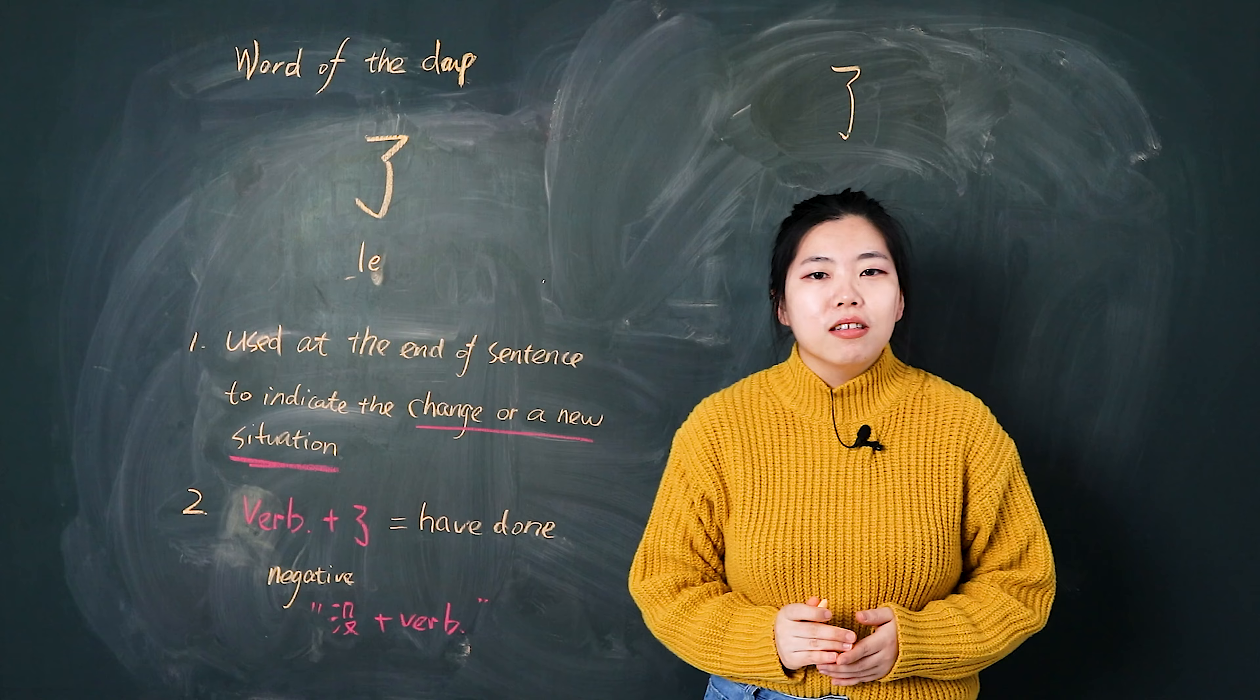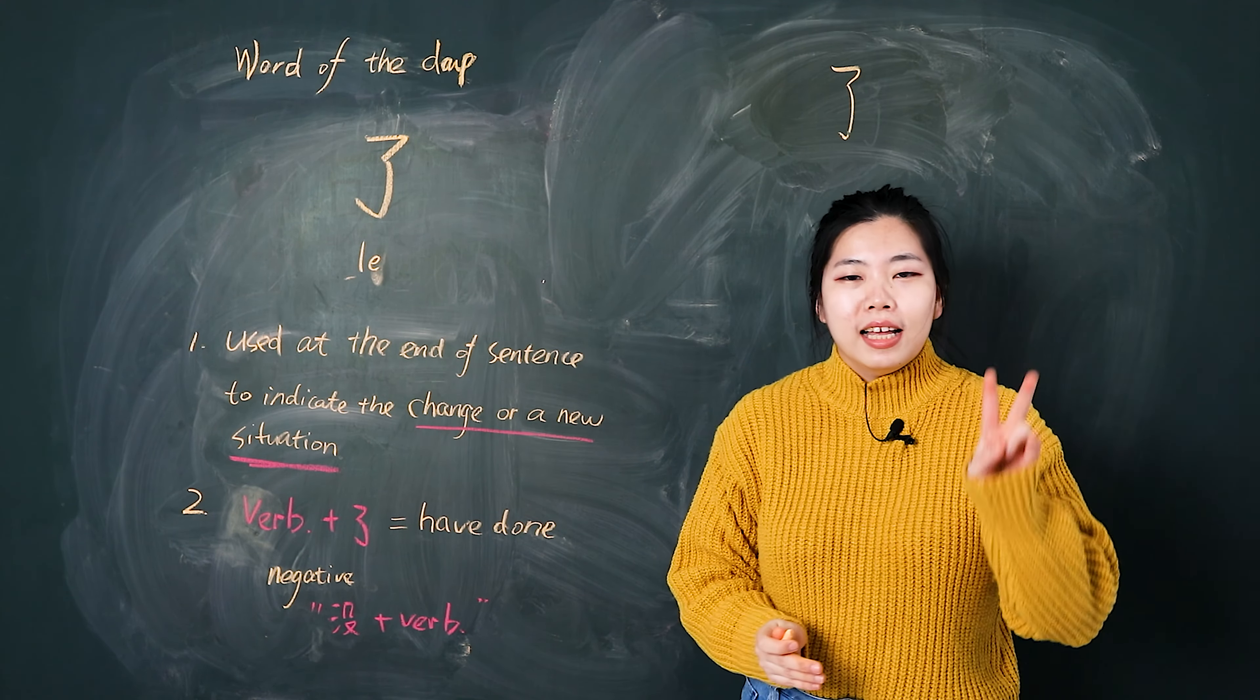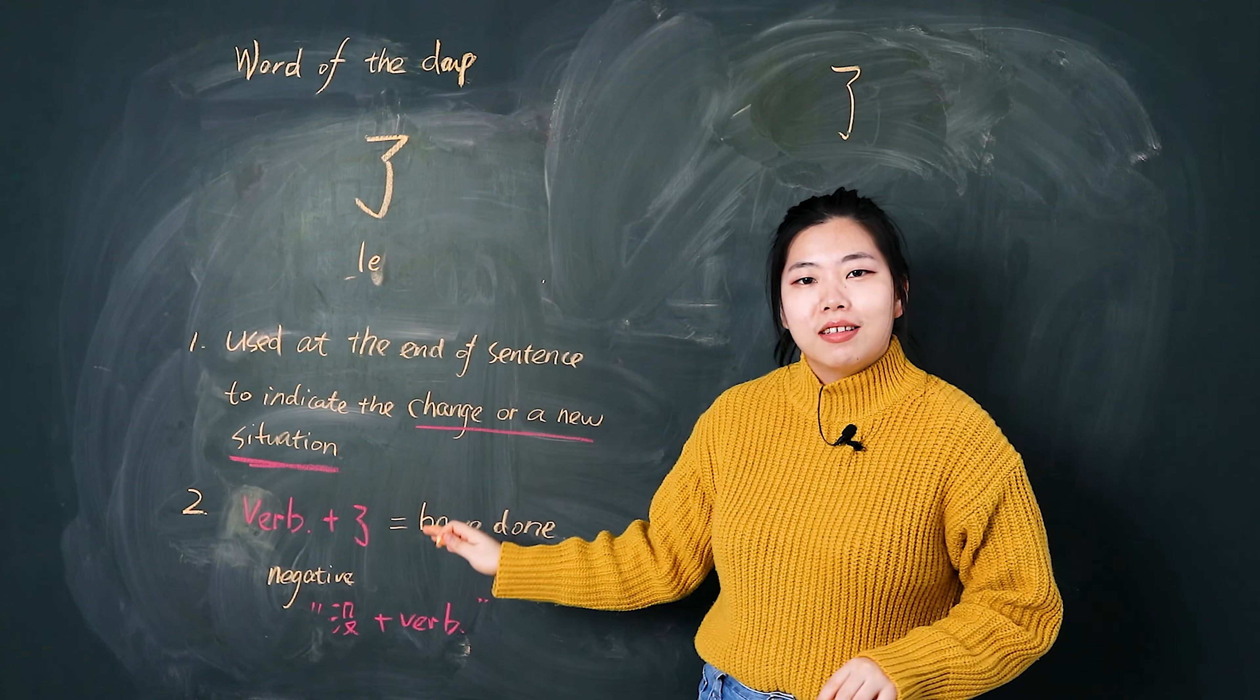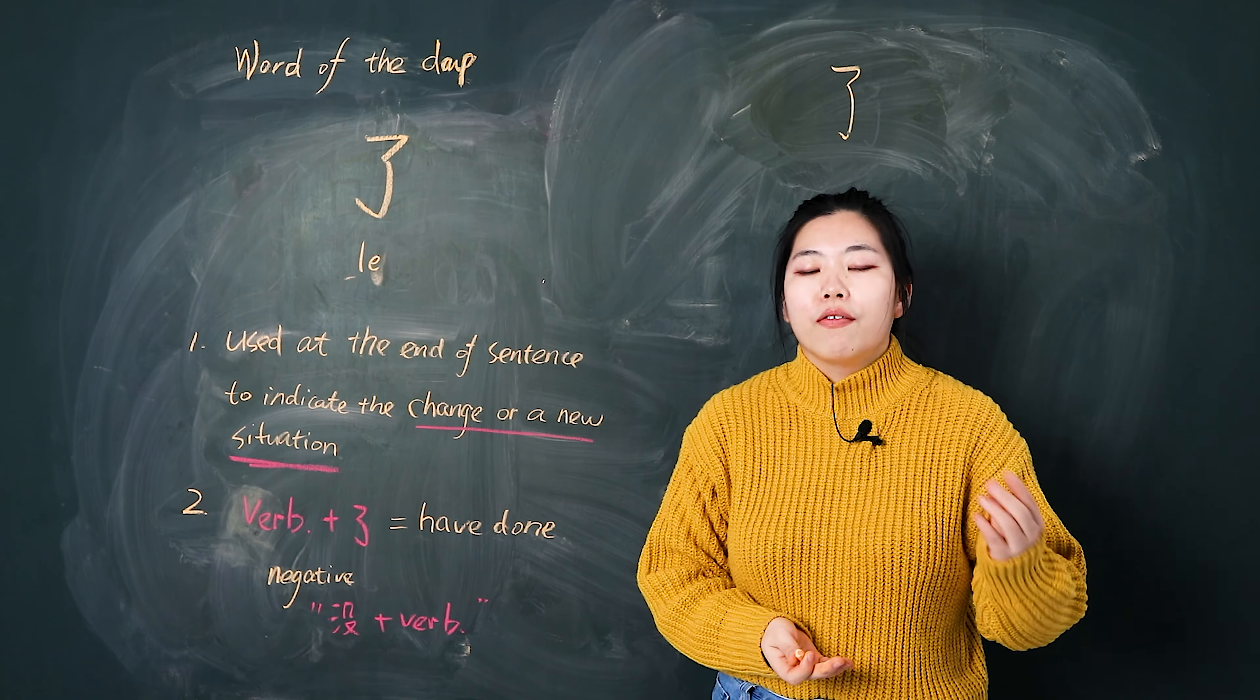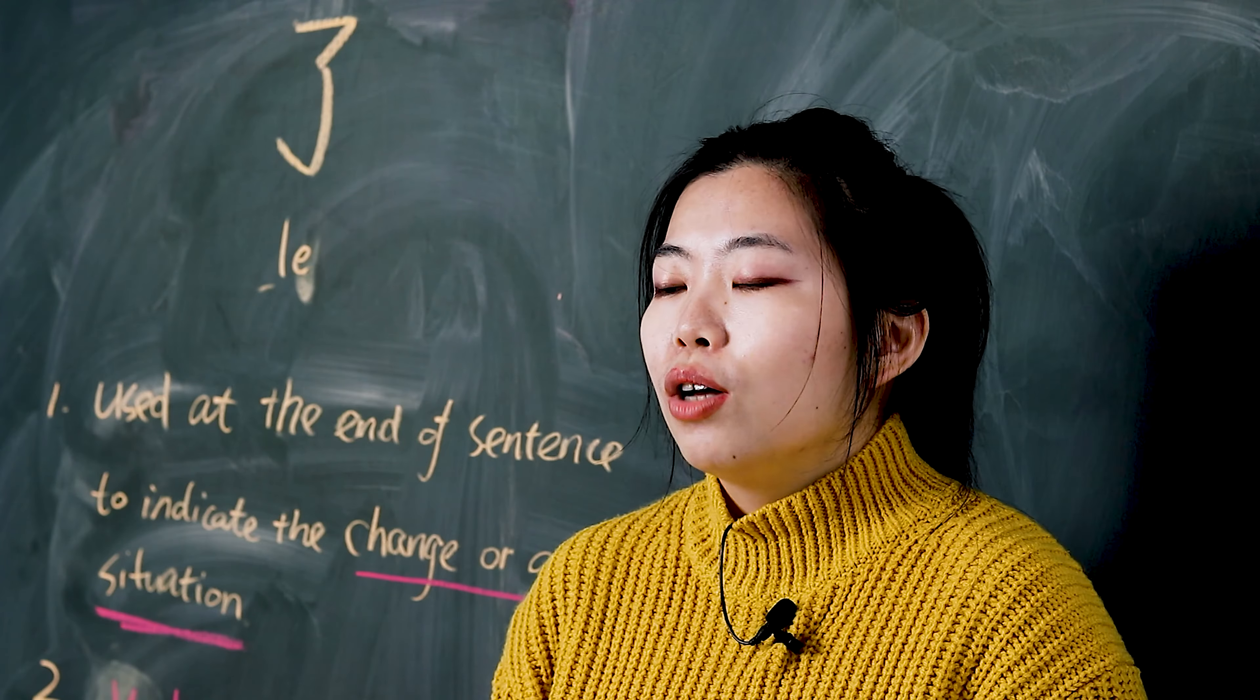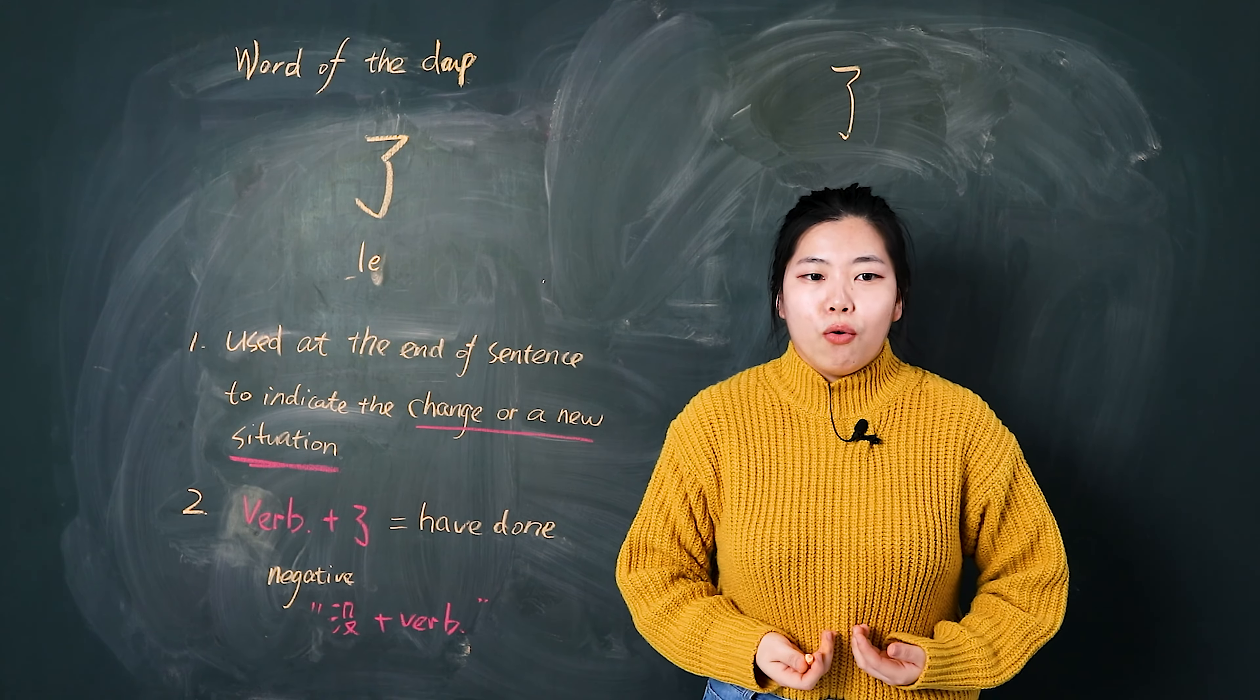So 了 at the end of the sentence means a new situation or situation change. The second is verb plus 了, which means similar to have done. I have already finished my homework. 我做完了我的作业. I have eaten already.